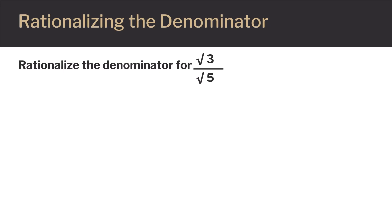Let's say we have the square root of 3 divided by the square root of 5. If we want to remove the radical from the bottom of this fraction, we will have to rationalize the denominator. The trick to removing that square root of 5 on the bottom is to multiply both the top and the bottom by the square root of 5.